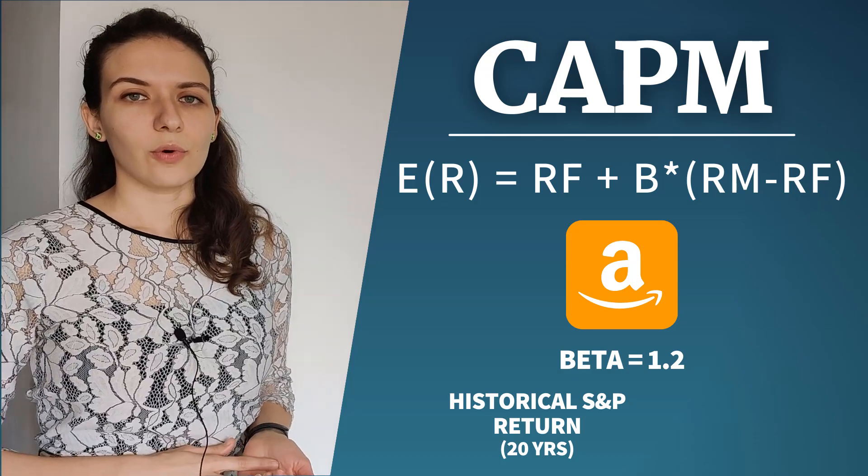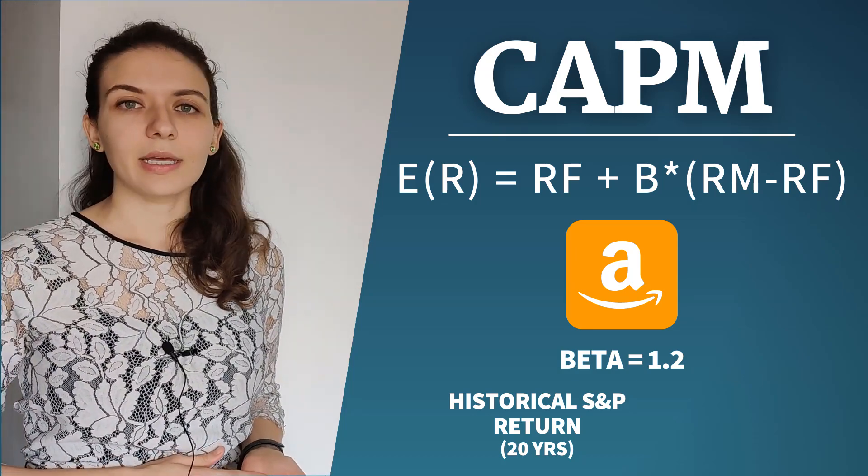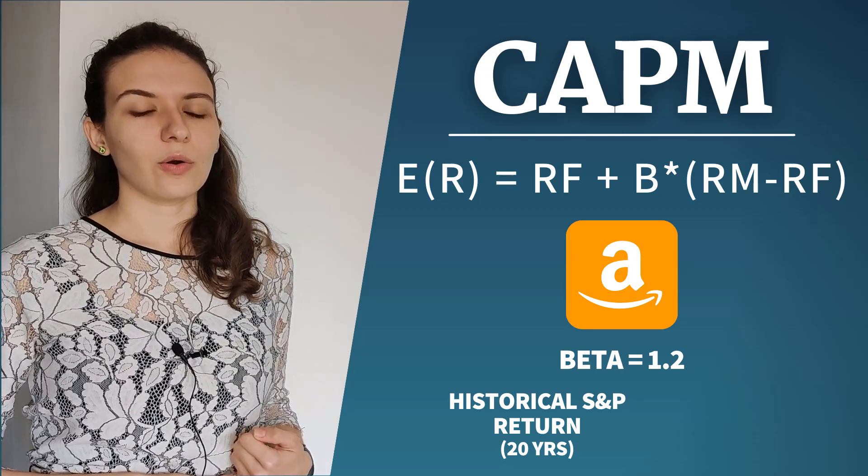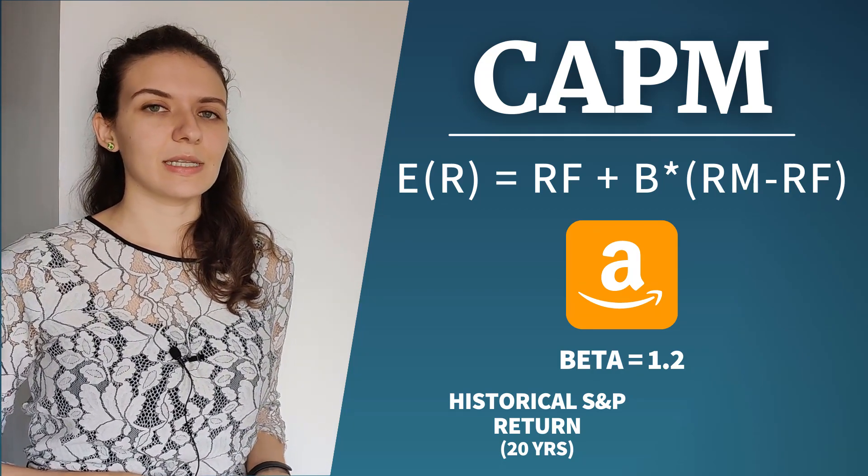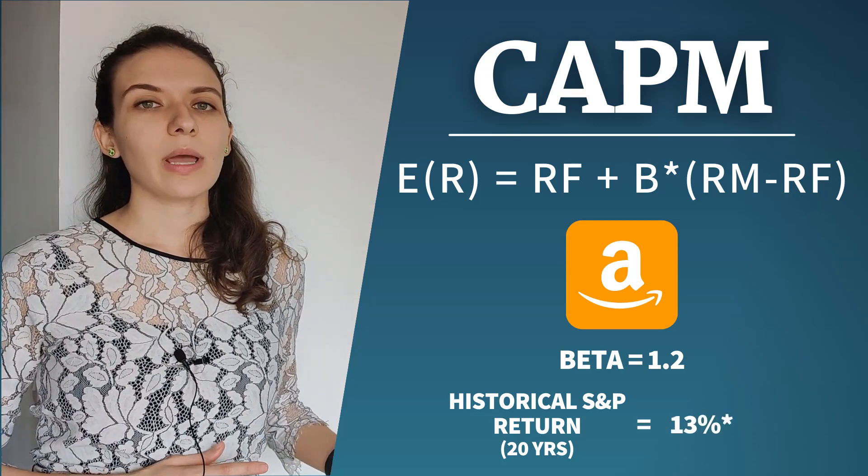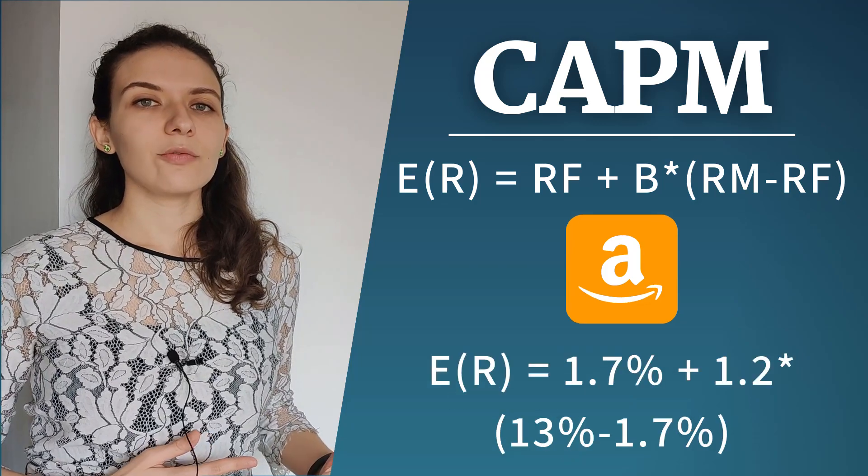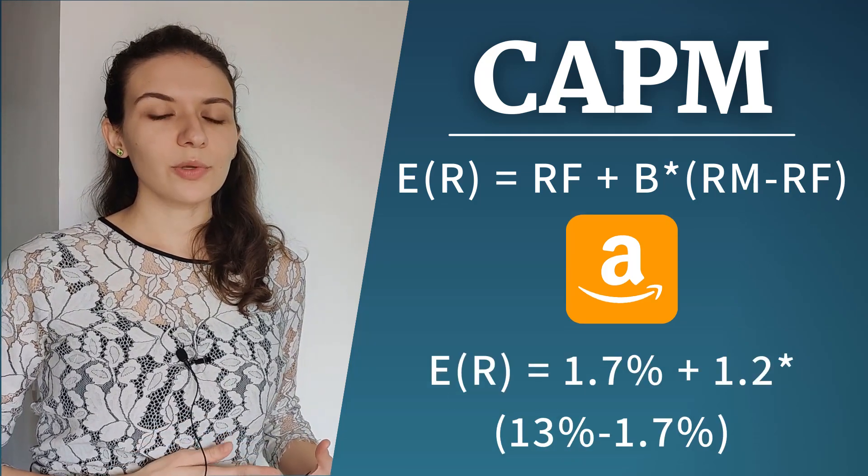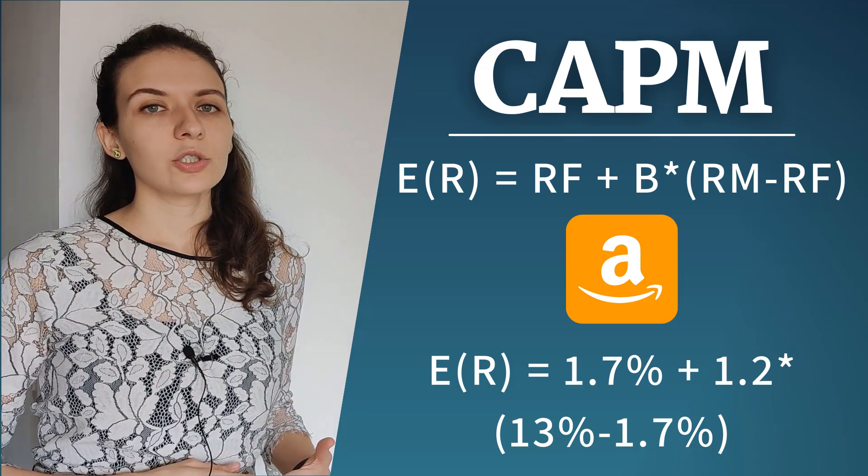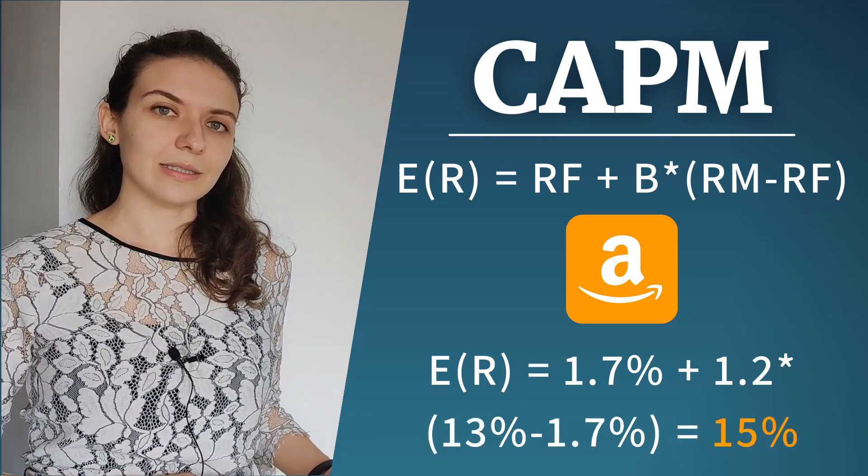Then we need to find the proxy for the expected market return and I used historical average return on the Standard & Poor's 500 considering the past 20 years and that number is 15%. So now we have all the information and if we plug these numbers into the formula we will see that the expected return on Amazon should be around 15% according to the CAPM.